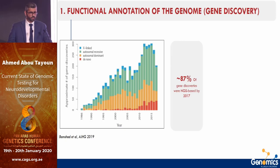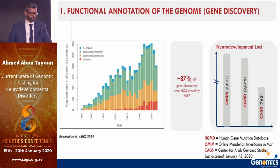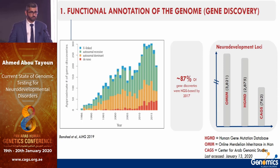If you query neurodevelopmental disease in OMIM or the Human Gene Mutation Database, you'll find thousands of genes and mutations. Looking at the Center for Arab Genomic Studies, including multiple congenital anomalies which are often comorbid with neurodevelopmental disease, I found above 700 entries related to neurodevelopmental disease.